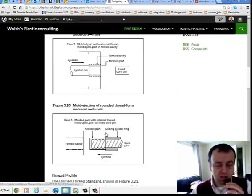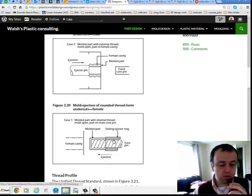Likewise, for the internal thread, the part must be 20 times the wall thickness so that the part is able to expand and roll over the threads.